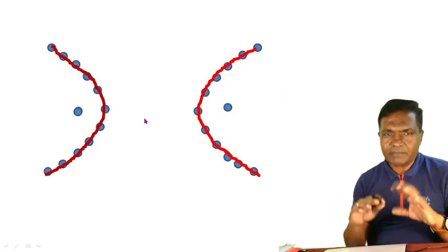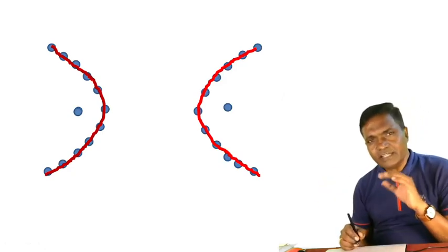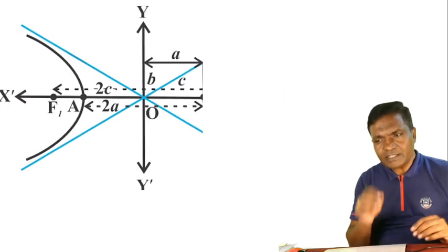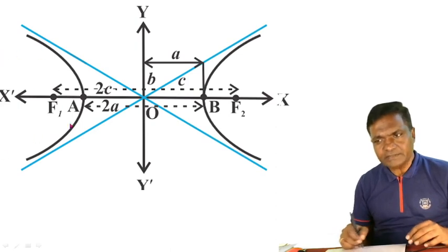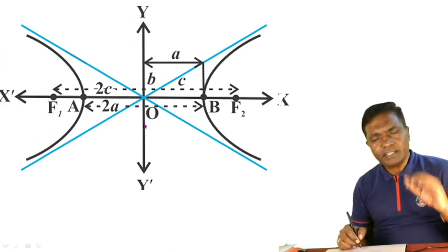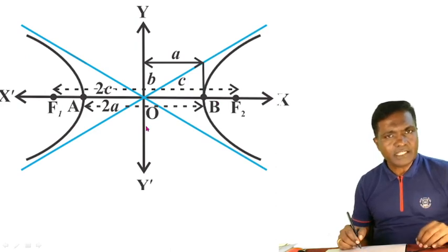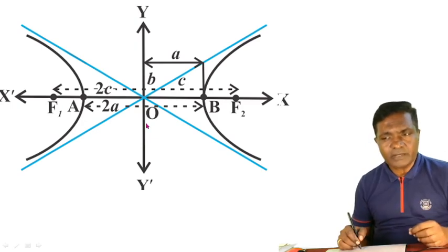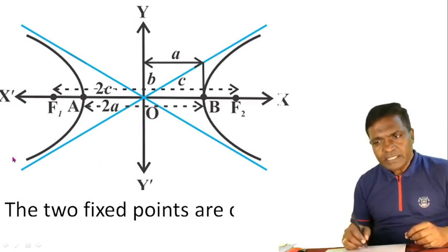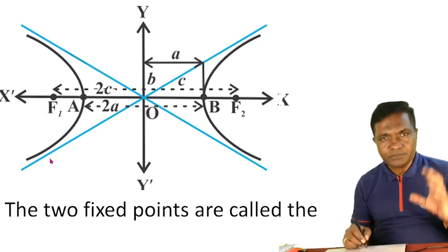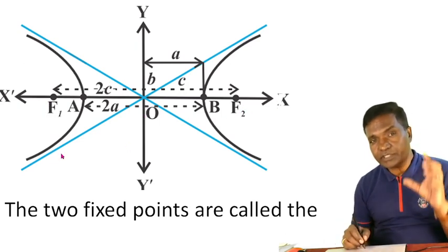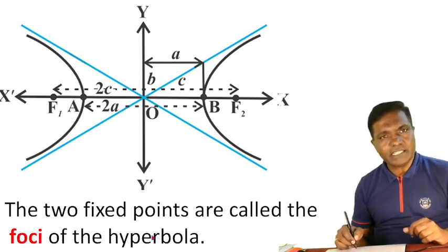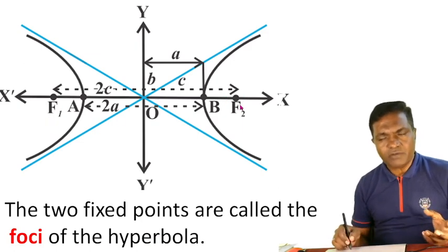Similar to a parabola but open on both sides — the hyperbola has this shape with the curve going outward. Now, the standard notations: the two fixed points F1 and F2 are the fixed points we consider.